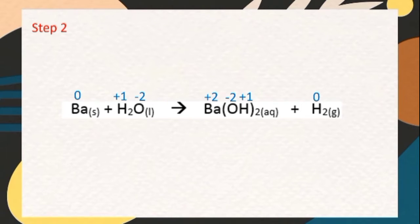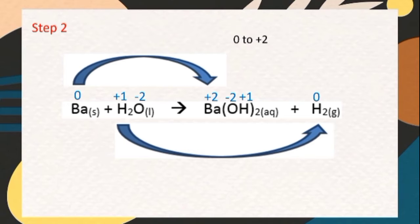Next step is to determine which elements showed an increase and decrease in oxidation state and determine which element is the oxidizing agent and which element is the reducing agent. As you can see, barium had an increase in oxidation state from zero to positive two, while hydrogen had a decrease in oxidation state from positive one to zero.